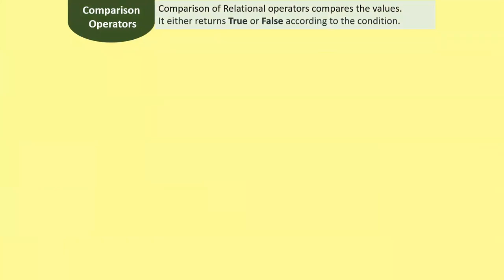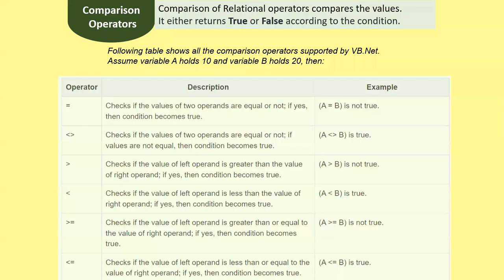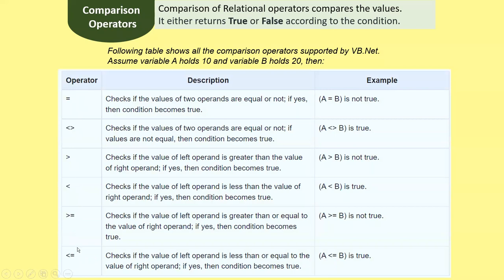Another type of operator is the comparison operator. Comparison or relational operators compare values and return either true or false according to the condition. The following table shows all comparison operators supported by VB.NET. In the examples, variable A holds 10 and variable B holds 20.